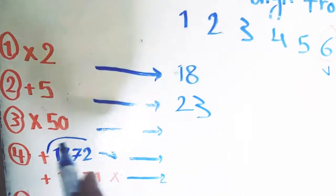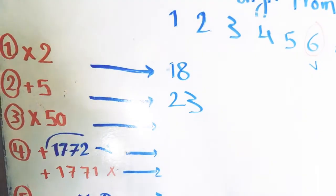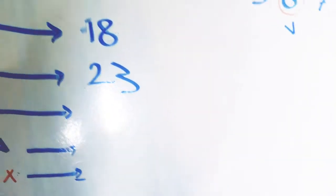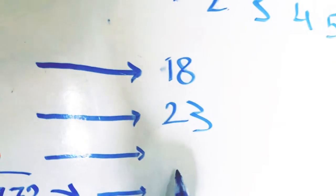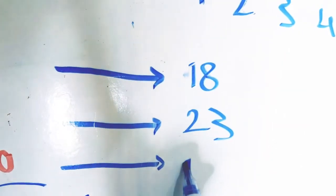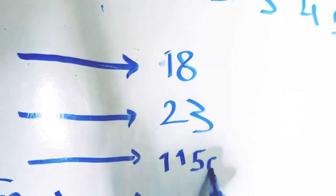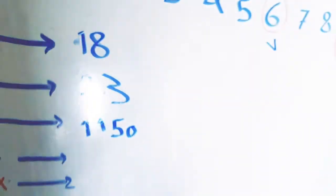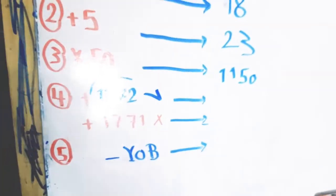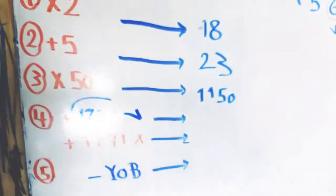Multiply this result by 50. When we multiply 23 by 50, we get 1150.